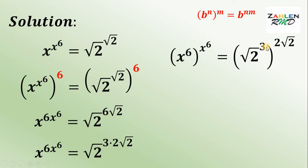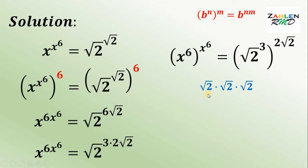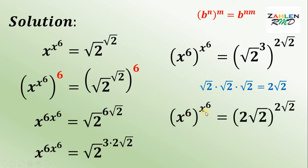Looking at the number inside the parentheses, we have square root of 2 raised to 3, which equals square root of 2 times square root of 2 times square root of 2. Square root of 2 times square root of 2 gives us square root of 4, and we know the square root of 4 is simply 2. Therefore, square root of 2 times square root of 2 times square root of 2 equals 2 square root of 2. We can substitute: x raised to 6, raised to x raised to 6, equals 2 square root of 2, raised to 2 square root of 2.